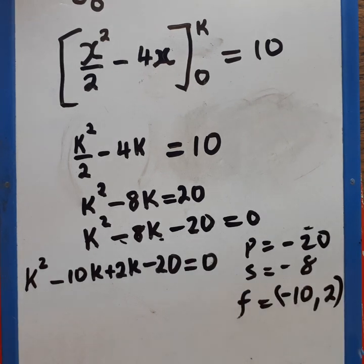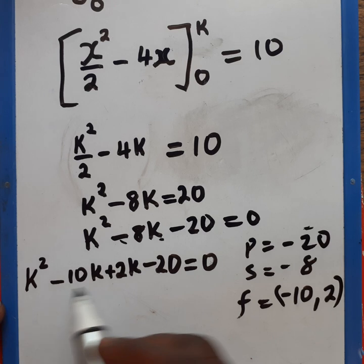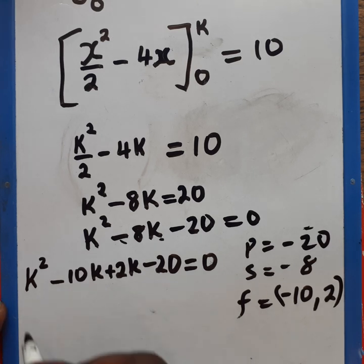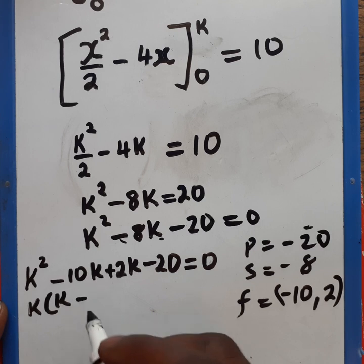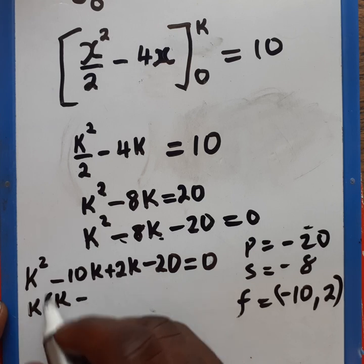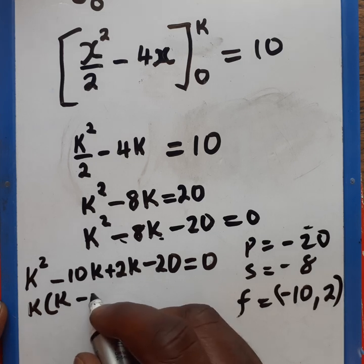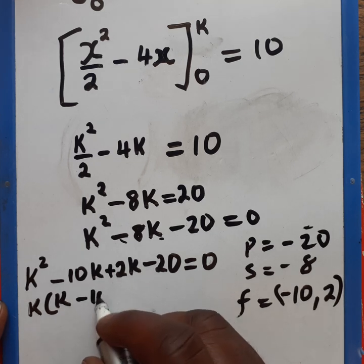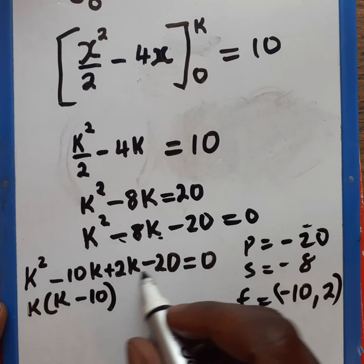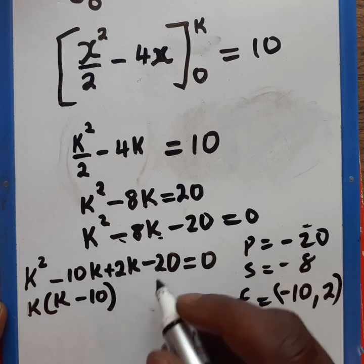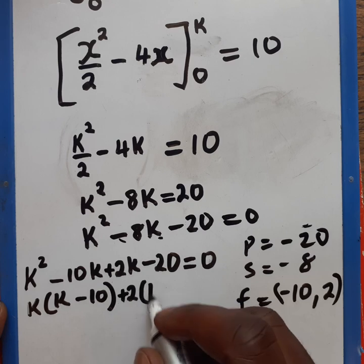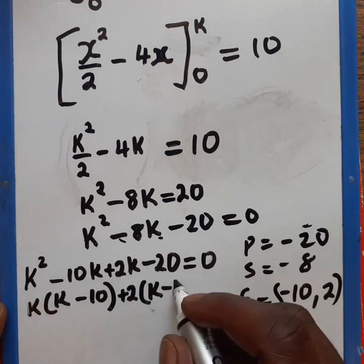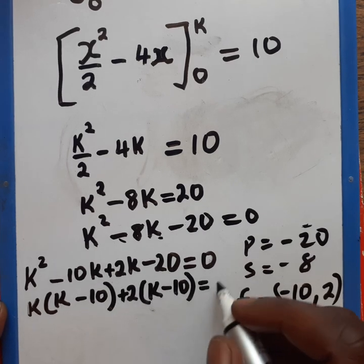Then we can factorize using the grouping method. So here we've got k open brackets k minus 10. Let's look at these two also. What is common here? What is common here is 2 plus 2 open brackets k minus 10. This is equals to 0.